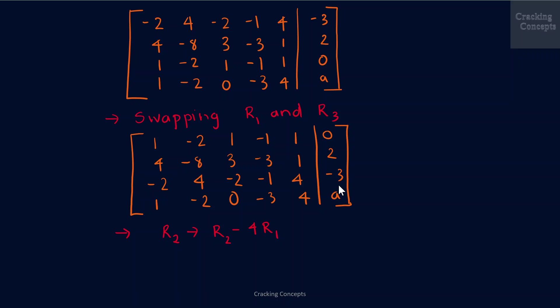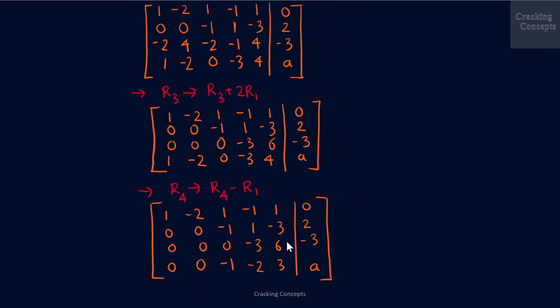I found that adding R2 with minus 4 times R1 gives zeros in the second row, so I convert the second row as R2 minus 4R1. Similarly, I add the third row with two times the first row, which again gives zeros in the third row. Also, I subtract the fourth row from the first row, which gives zeros in the last row.